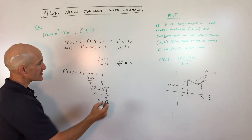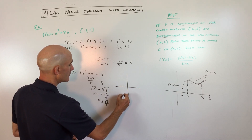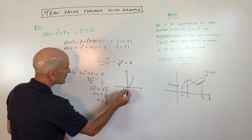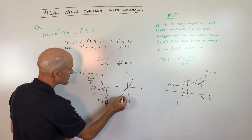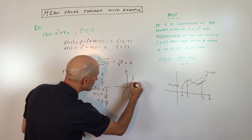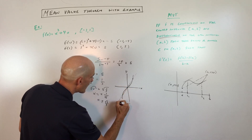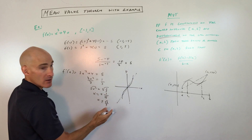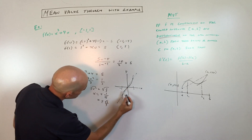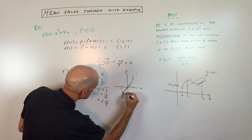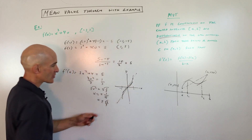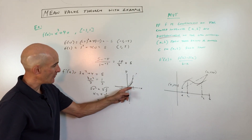Just to show you on the graph — you can also graph it on your calculator. We have the two endpoints: negative 1, negative 5 down here, and positive 1, positive 5 up here. Looking at the slope of the line through the two endpoints, in between negative 1 and positive 1 there has to be a point where the instantaneous rate of change is the same as the average rate of change. Those are these two points at negative square root of 3 over 3 and positive square root of 3 over 3, where the instantaneous rate of change equals the average rate of change.